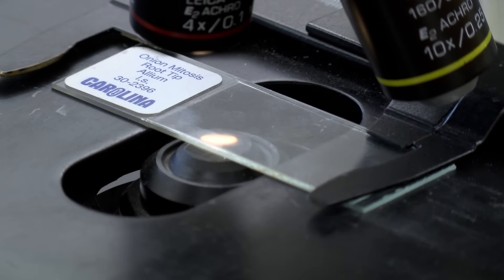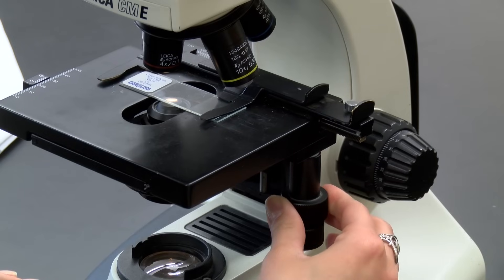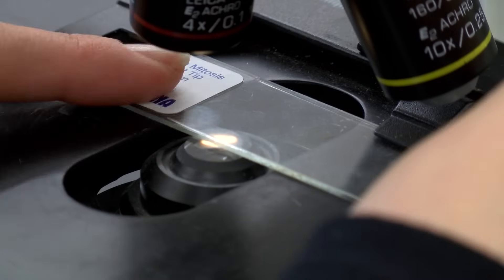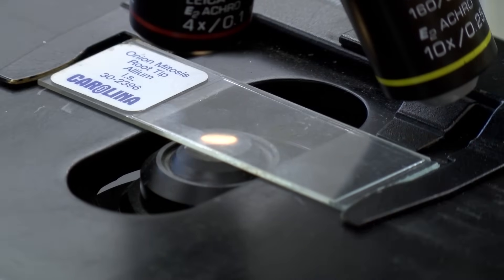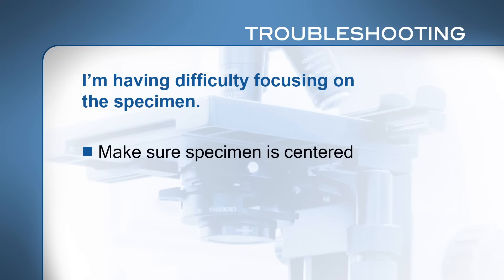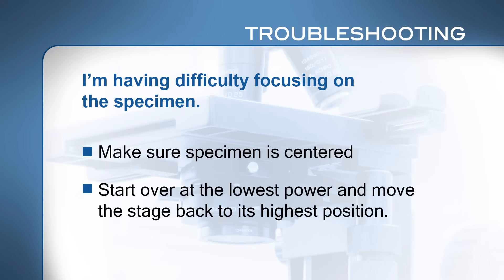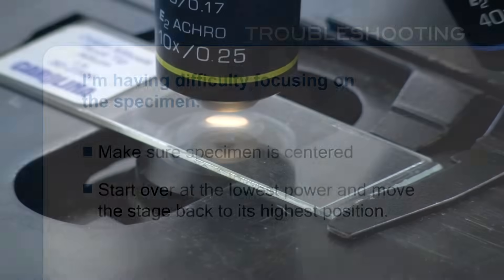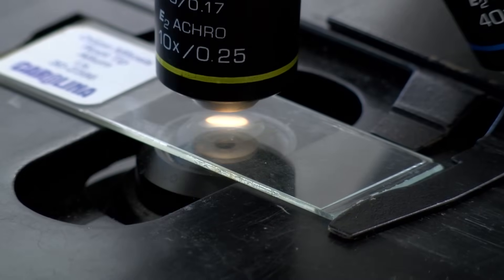If your slide doesn't move when you turn the knobs to adjust the slide holder, make sure you are using the right knobs and that the slide is clipped in place properly. If you are having trouble finding the specimen, make sure your specimen is centered. Start over at the lowest power and move the stage back to its highest position. If you get frustrated trying to focus, you can easily get so far out of focus that it's easier to start over. You should only need to do minor adjustments at each magnification. When focusing, move the slide just a little bit back and forth with the slide holder knobs — your eyes can see motion better than stationary objects.